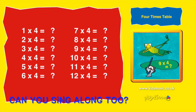Five times four is twenty. Six times four is twenty-four. Seven times four is twenty-eight. Eight times four is thirty-two.